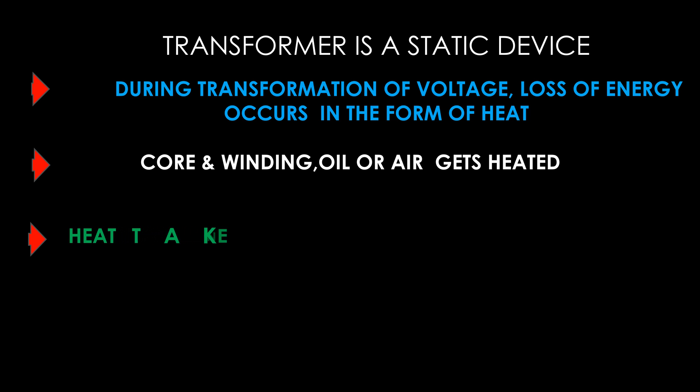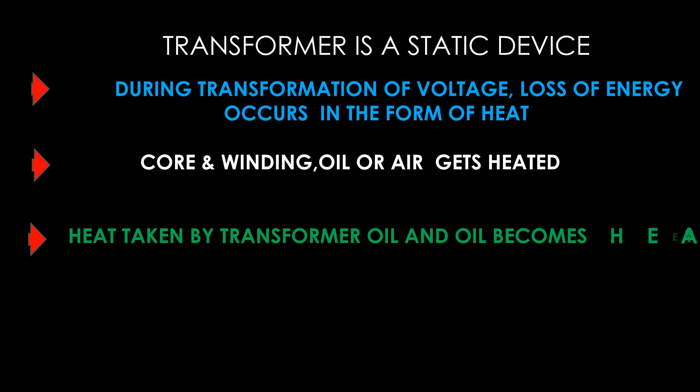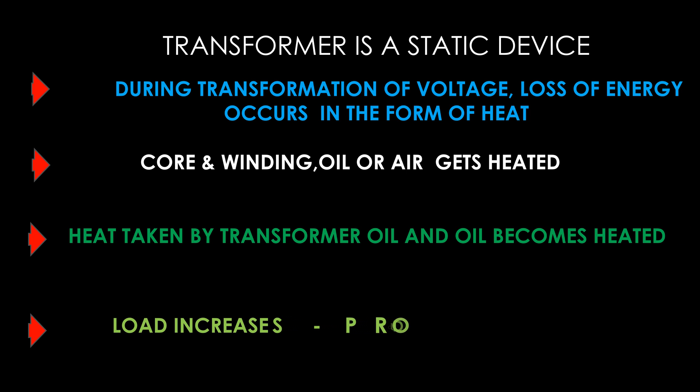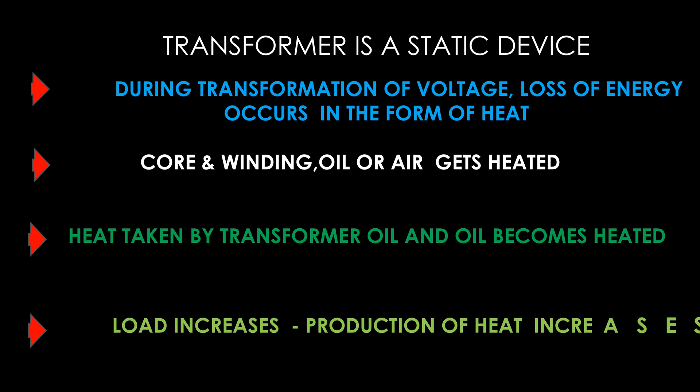A transformer needs cooling when load increases due to loss of energy in the form of heat. During conversion of voltage and thereby feeding of load, the core and winding become heated. This heat is taken by the transformer insulating oil, thus increasing the temperature of the oil. So transformer oil needs to reduce its excessive temperature through cooling apparatus, to maintain a suitable temperature and prevent any damage to insulation.